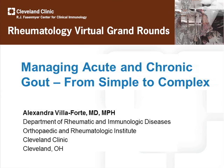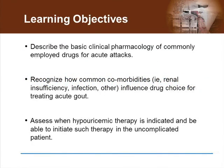Thank you all for joining us. Today, I will be discussing the management of acute and chronic gout from simple to complex patients. The learning objectives include: to describe the basic clinical pharmacology of commonly employed drugs for acute gout attacks, to recognize how common comorbidities influence drug choice for treating acute gout, and to assess when hyperuricemic therapy is indicated and be able to initiate such therapy in the uncomplicated patient with gout.